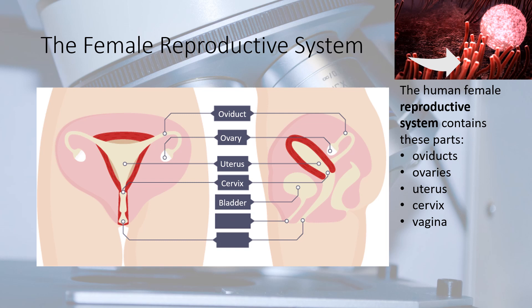Your bladder is the part of the body where urine is stored until it leaves your body. The urethra is the tube that carries urine. The vagina is a muscular tube that leads from the cervix to the outside of a woman's body. A man's penis goes into the woman's vagina during sexual intercourse.